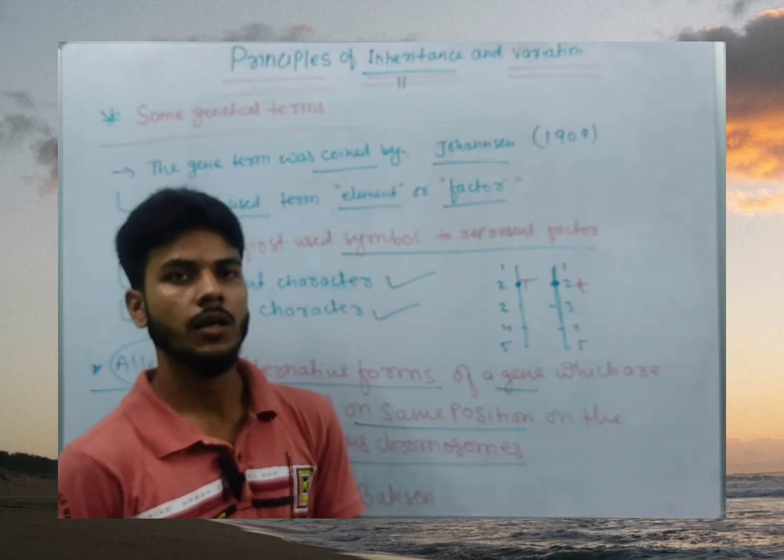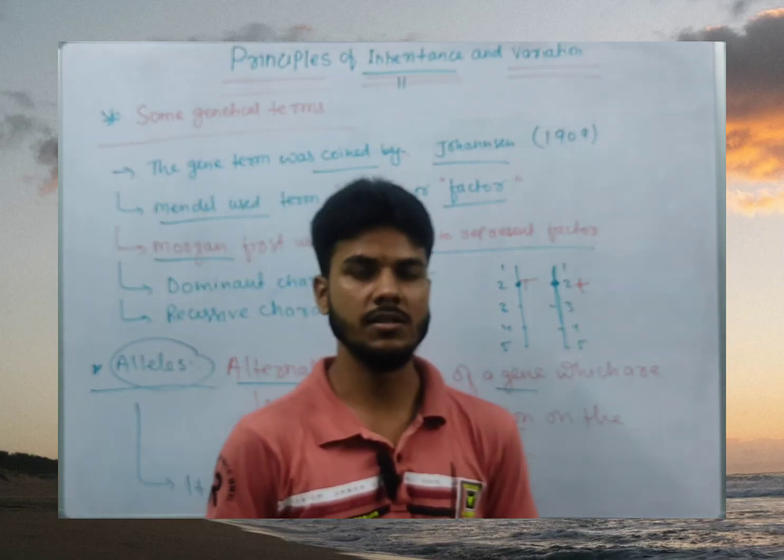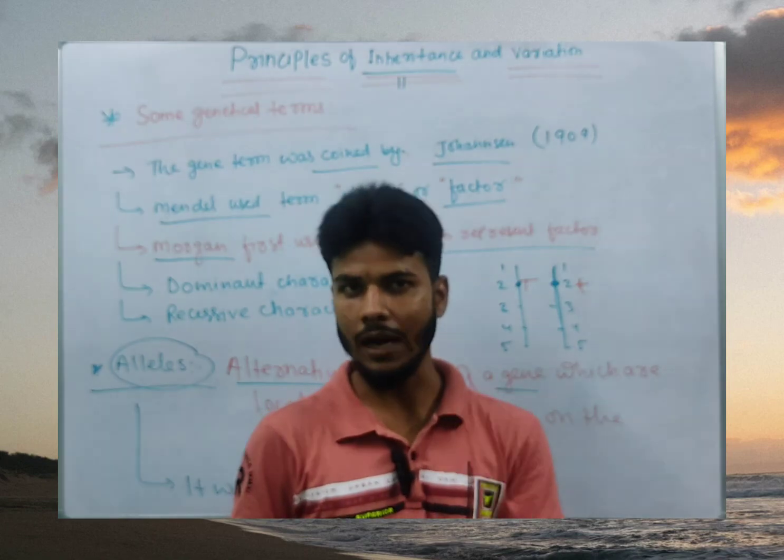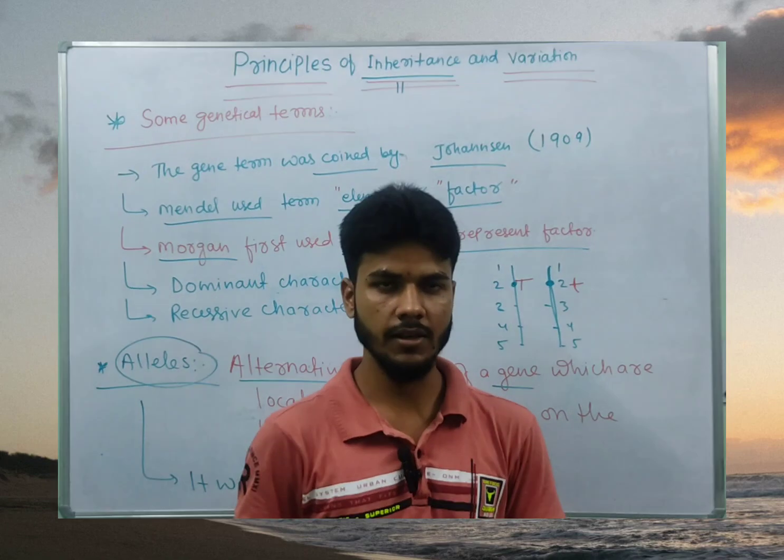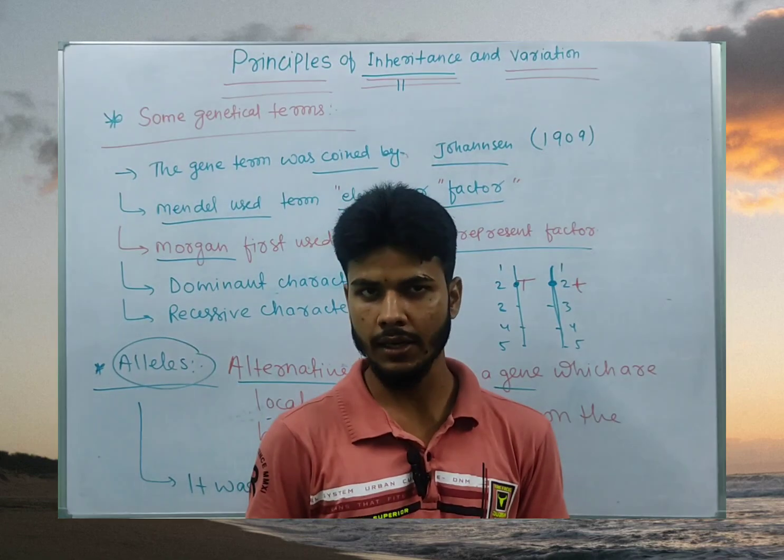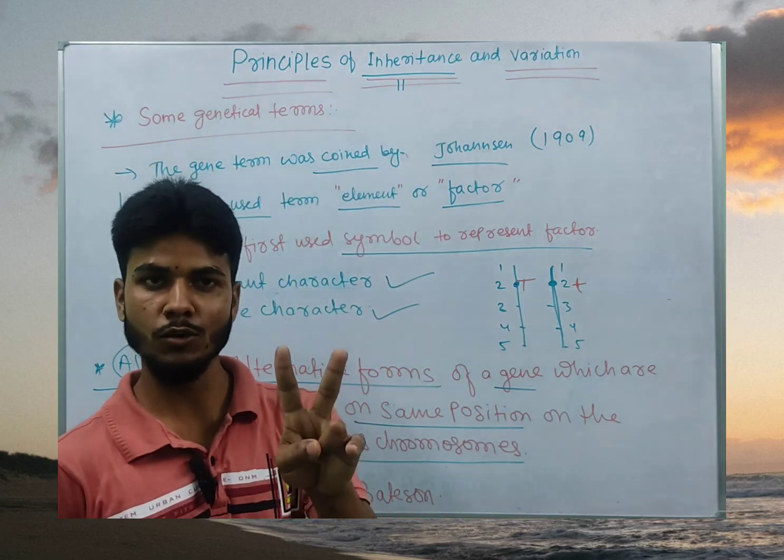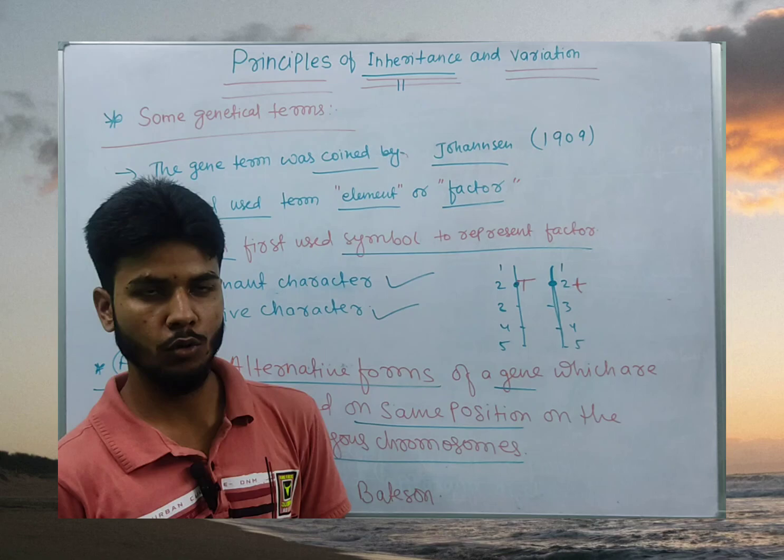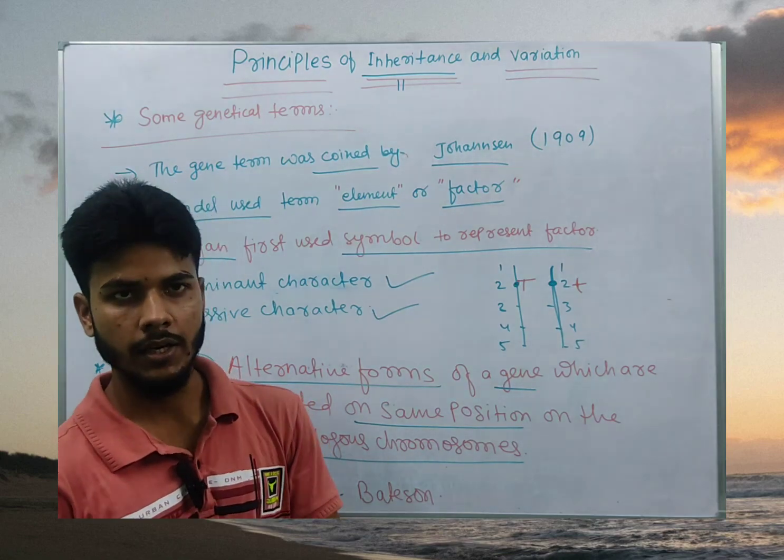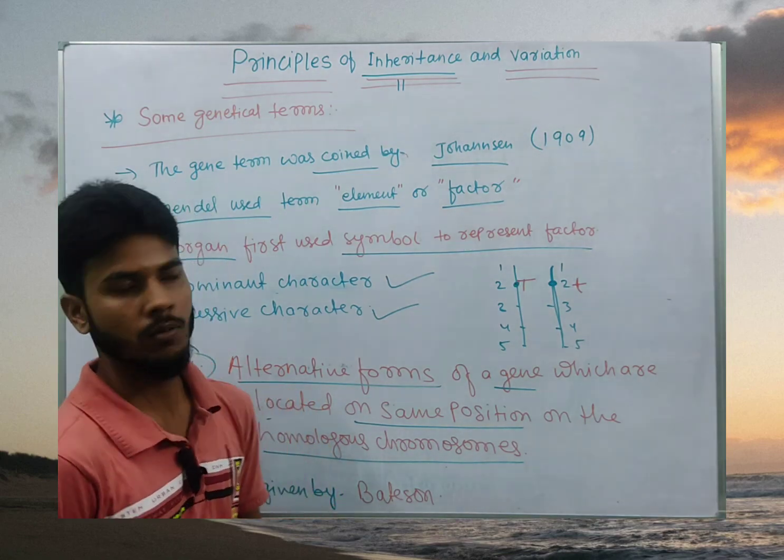If you talk about human blood grouping, the gene I which regulates the blood group, they have three forms. IA, IB and INUD. They have a blood group in the next class. Incoming classes and videos we will discuss.